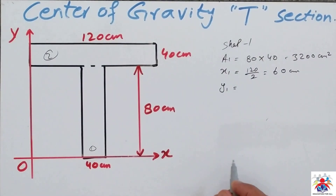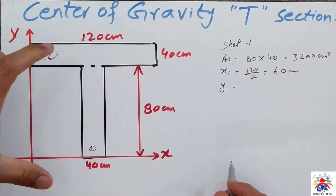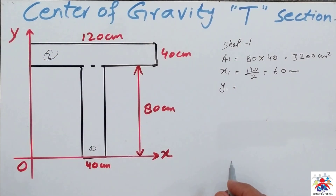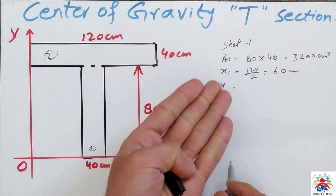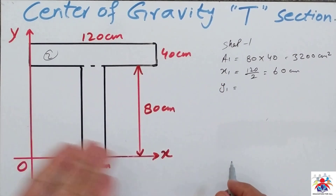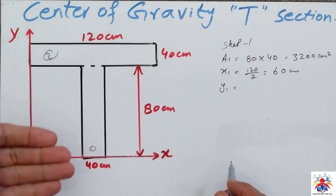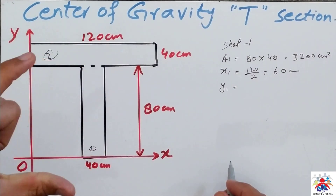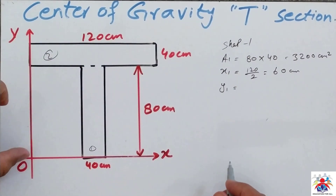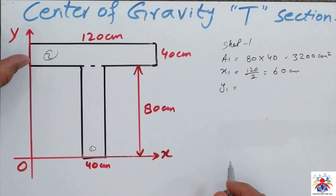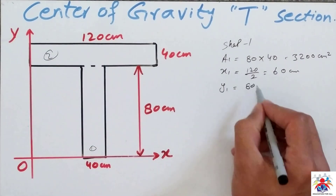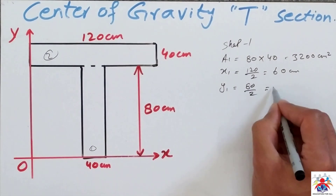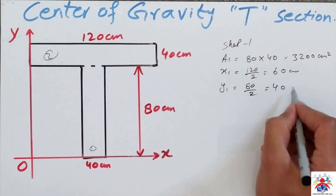Now we calculate y1 along the y-axis. From the y-axis origin to the bottom of shape one we have 80 centimeters, so y1 is 80 divided by 2, which equals 40 centimeters.